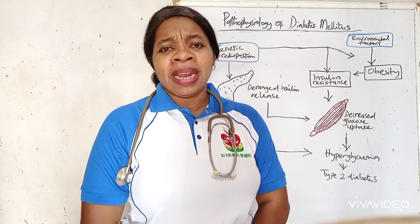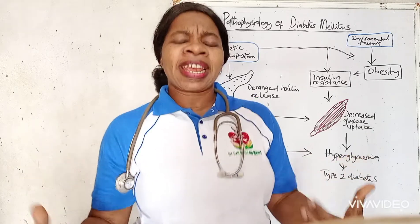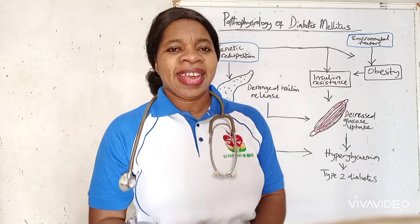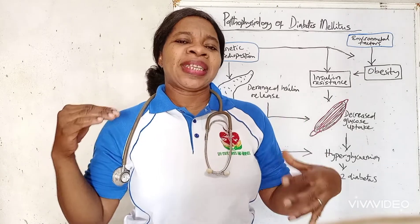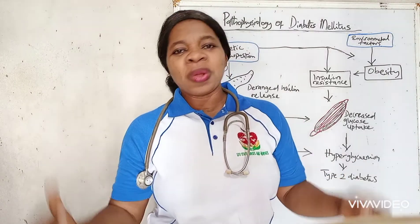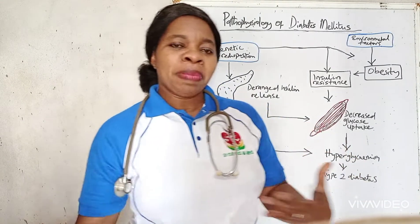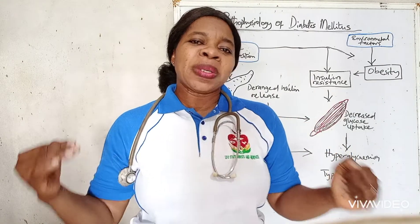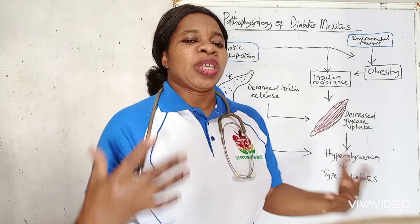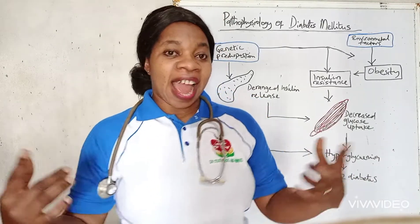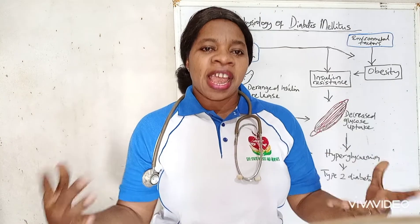Diabetes mellitus is a chronic metabolic disorder characterized by a persistently high level of glucose. Over time, this high glucose level can cause damage to the heart, the kidneys, the eyes, the liver, and the nerves.